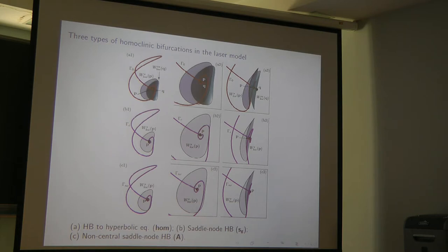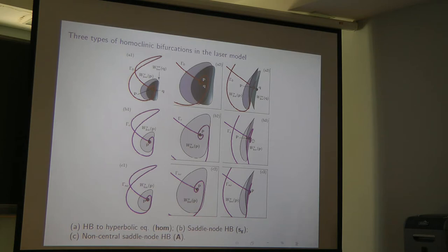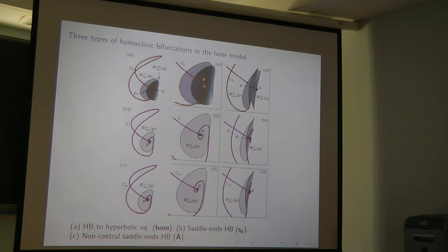At the moment of the saddle-node homoclinic bifurcation, the two equilibria approach each other and merge into a single non-hyperbolic equilibrium P with a center manifold. The loop gamma_C (C for central) belongs to the center manifold, makes an excursion, and comes back — but returns on one side of the local stable manifold. It starts from one side, makes a loop, and converges back on the other side. This is the codimension-1 saddle-node homoclinic bifurcation, also called a saddle-node bifurcation on an invariant closed curve.